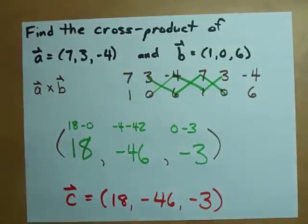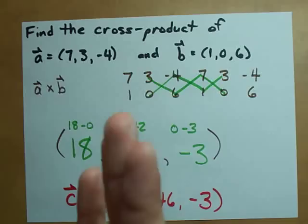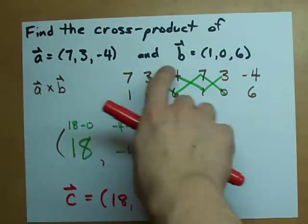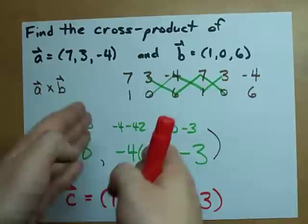Now, for those of you who are asking, what does that even mean? Well, the magnitude of this vector is equal to the area of the parallelogram that is made by these two vectors and the origin.